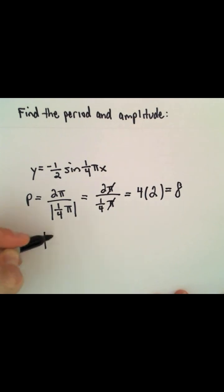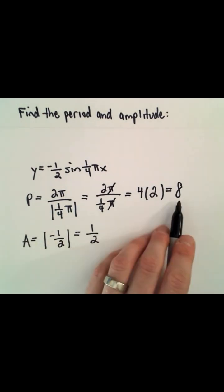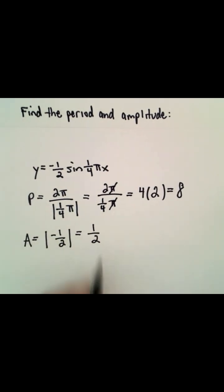To get the amplitude, we'll have to take the absolute value of negative one-half, which will simply give us positive one-half. So this function has a period equal to eight and an amplitude equal to positive one-half.